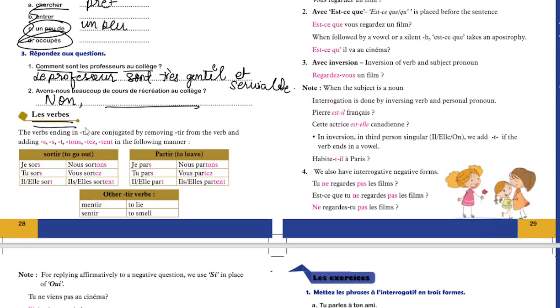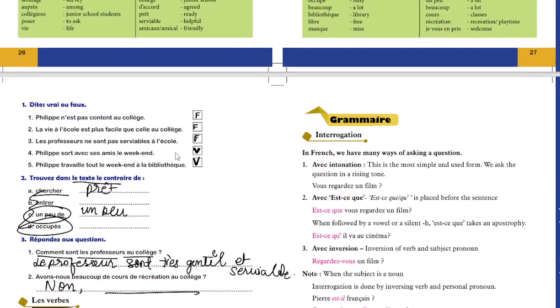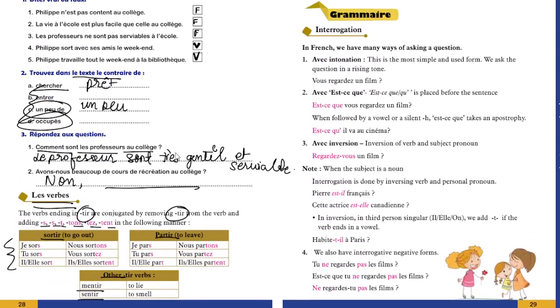Now the verbs. We are seeing T-I-R verbs. That is your I-R verbs. There are some exceptions here: Sortir, Partir, Dormir, Mentir and Sentir. Here you can see the conjugation is different. We drop the T-I-R and then we add S, S, T or O-N-S, E-Z and E-N-T. This is the conjugation you have to see.